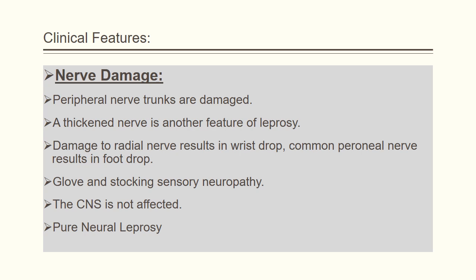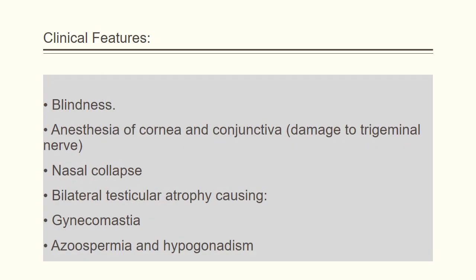Radial nerve damage results in wrist drop, and common peroneal nerve damage results in foot drop. Glove and stocking sensory neuropathy is also common. CNS is not affected because the bacteria do not cross the blood-brain barrier. Pure neural leprosy can be seen in some patients, with asymmetrical involvement of peripheral nerves without any skin involvement. Other clinical features may include blindness; eyelid closure is impaired when the facial nerve is involved, and damage to the trigeminal nerve can lead to anesthesia of the cornea and conjunctiva.